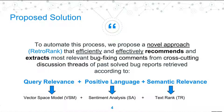To automate this process, we propose a novel approach called RETORREC that efficiently and effectively recommends and extracts the most relevant bug fixing comments from cross-cutting discussion threads of past bugs, retrieved according to query relevance, positive language, and semantic relevance.